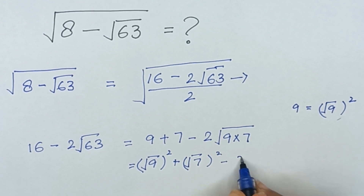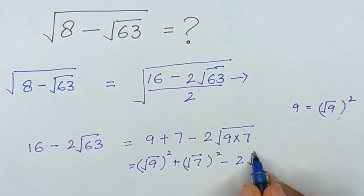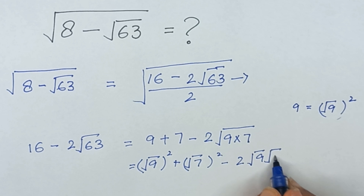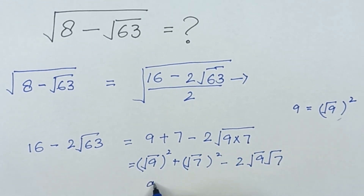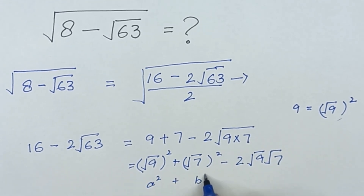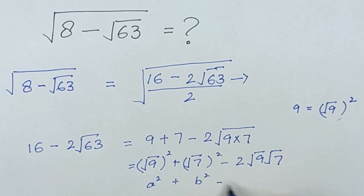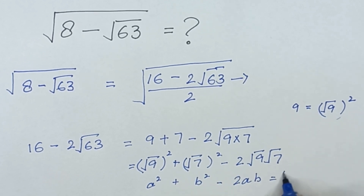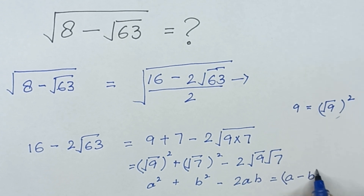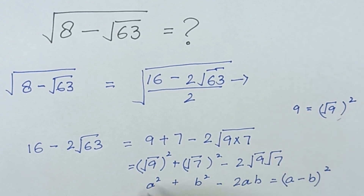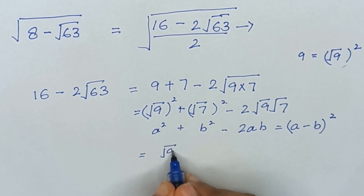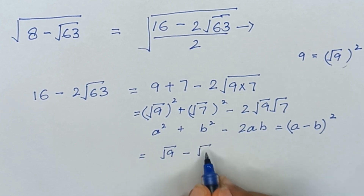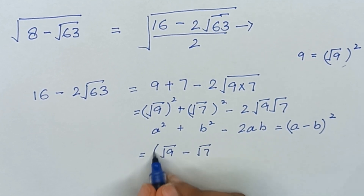Minus 2 times square root of 9 times square root of 7. Now it is in the form of a² plus b² minus 2ab, which is equal to (a minus b)². So this means it will become (√9 minus √7)².